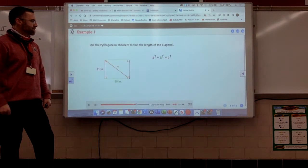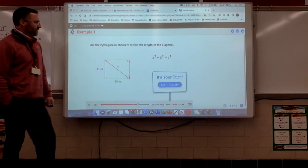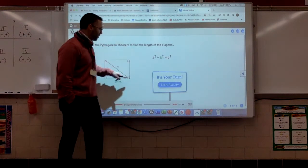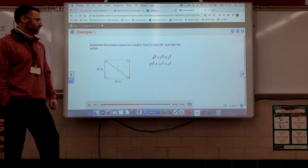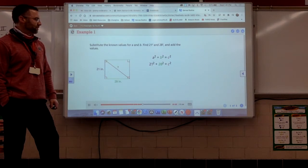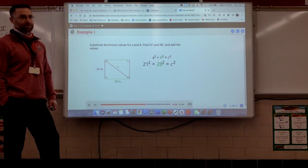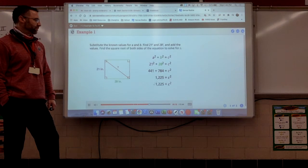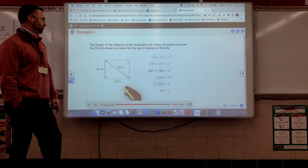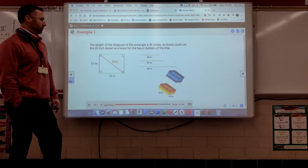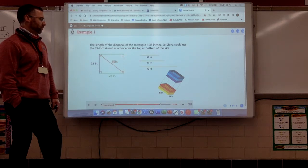We can use the Pythagorean theorem to find the length of the diagonal. And you guys know this, 21's going in there for A, 28's going in there for B. Square them, add them together. Substitute the known values for A and B. It doesn't matter which value you choose for A and which you choose for B. The sum of the two squares will be the same. Find the squares and add the values. Find the square root of each side of the equation to solve for C. The length of the diagonal of the rectangle is 35 inches. So, Kiana could use the 35-inch dowel as a brace for the top or bottom of the kite. She could also cut the 49-inch dowel to a length of 35 inches.